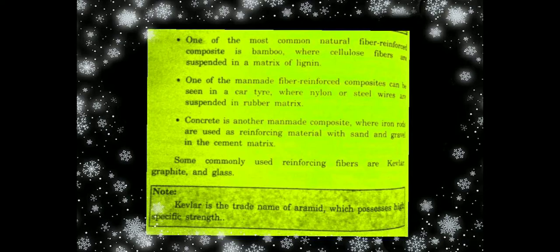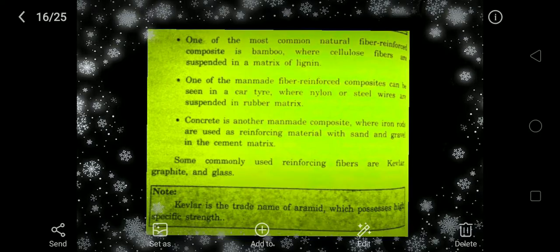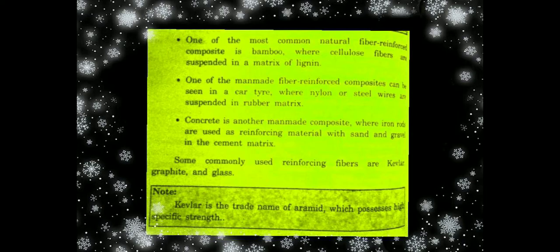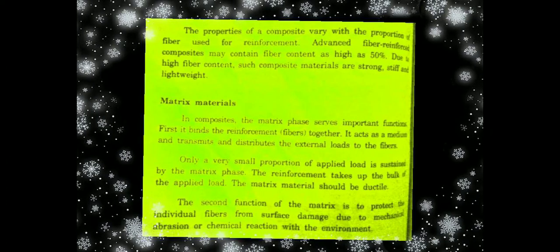Some commonly used reinforcing fibers are Kevlar, graphite, and glass. Kevlar is a synthetic aromatic polyamide, also called aramid. Kevlar or aramid is used for making fireproof jackets and knife-resistant proof jackets. These are made up of this kind of material, which is why we refer to it as Kevlar or aramid.